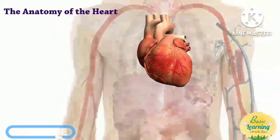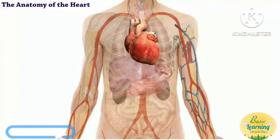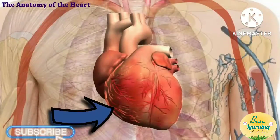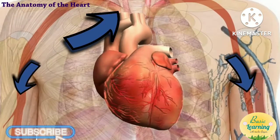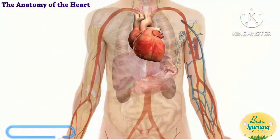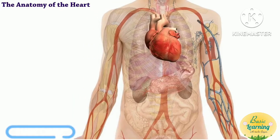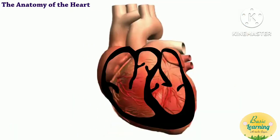Your heart is located in the center of your chest. Its muscular walls contract, which creates your heartbeat and pumps blood throughout the body. As your blood moves around, it delivers nutrients and oxygen to every cell in the body.